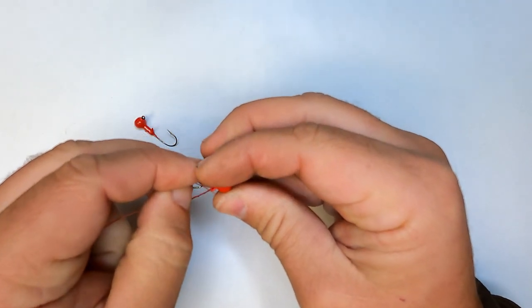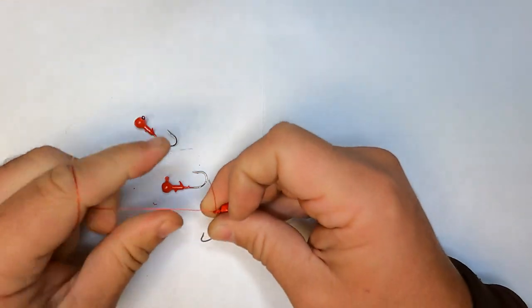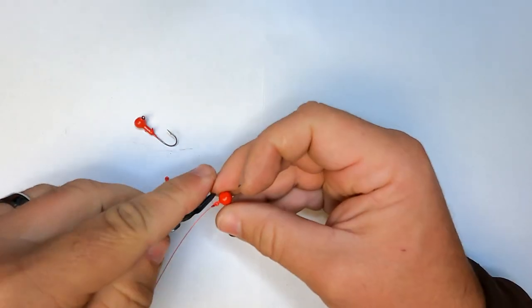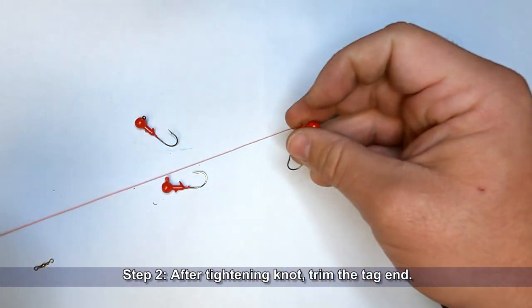And what we will do is take and use an improved clinch knot, tie that jig, trim the tag and leave just a hair there.